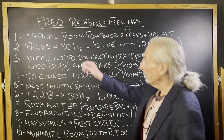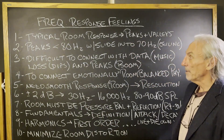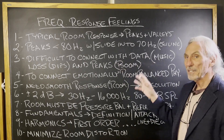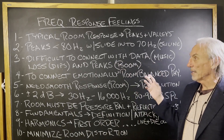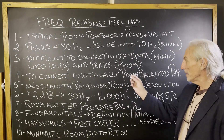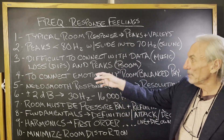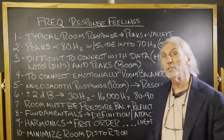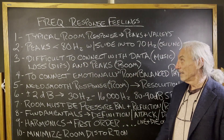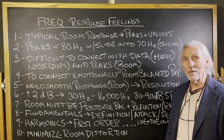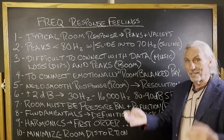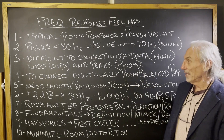We always have those peaks in the typical room response below 80 Hz — that slide in the 70s. It's difficult to connect with the music when you have all these peaks, all this exaggeration, and then all this attenuation with dips. With attenuation you're not hearing anything — you're missing frequencies. And with the peaks you're hearing too much. So you're constantly hearing too much or not hearing enough.